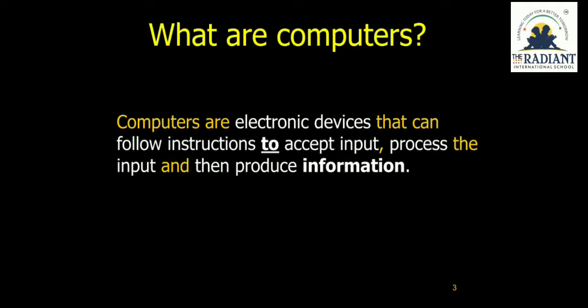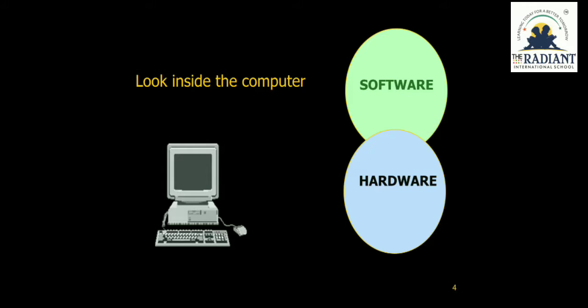Computers are electronic devices that can follow instructions to accept input, process it, and produce information. In other words, a computer is an electronic device that accepts data and instructions given by the user, processes them accordingly, and gives meaningful results.